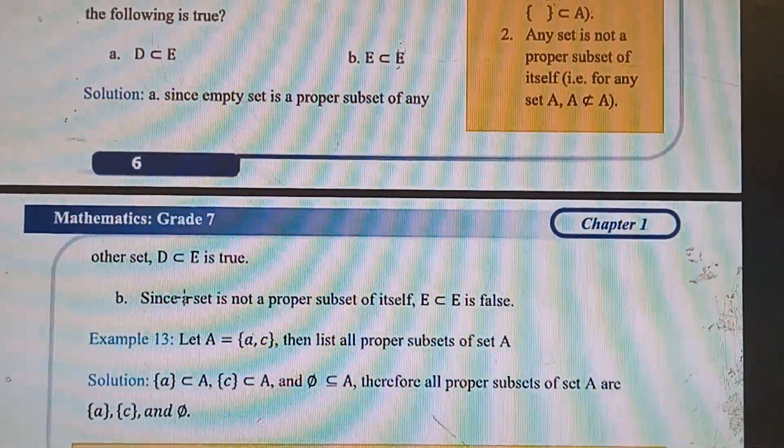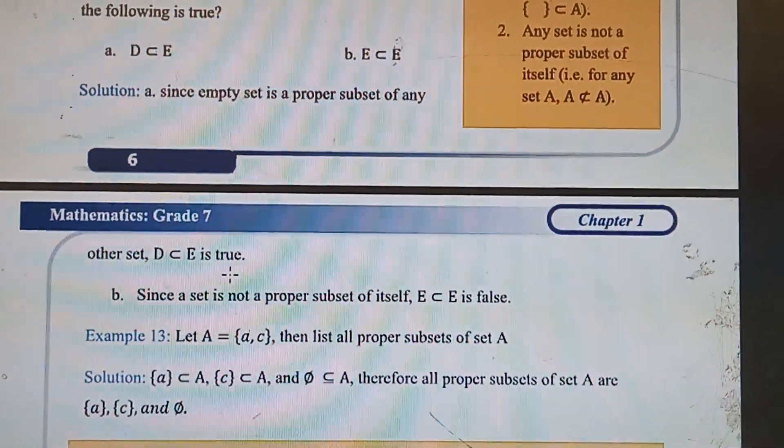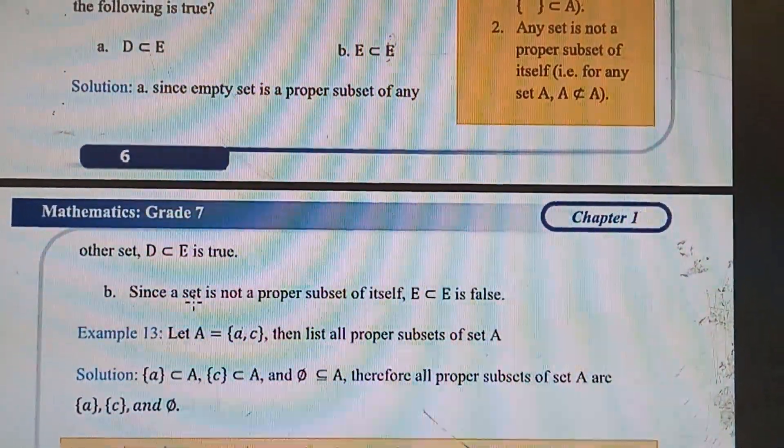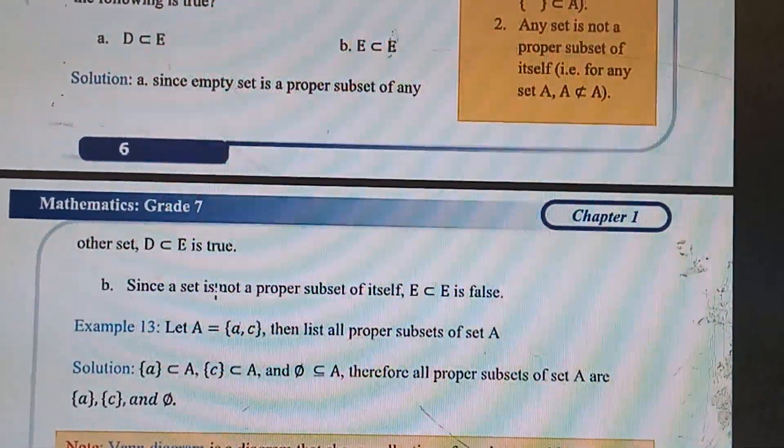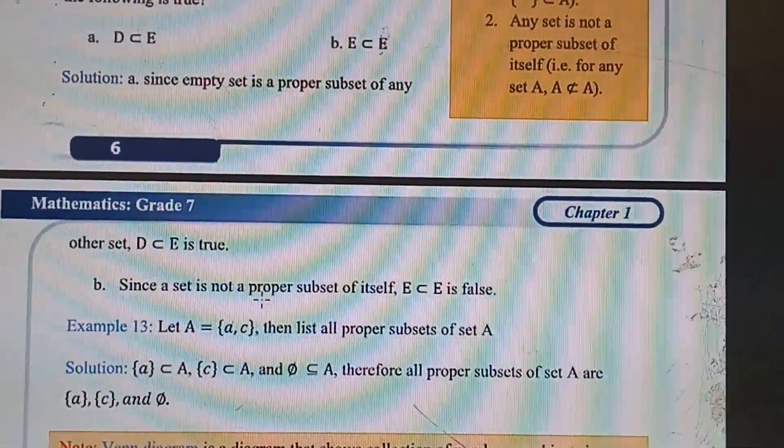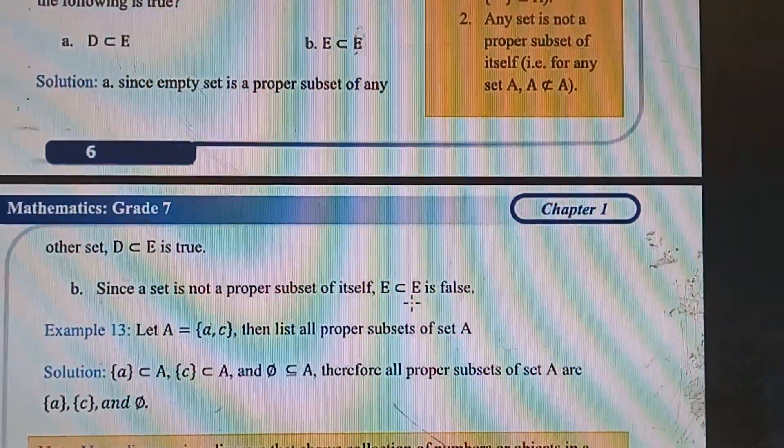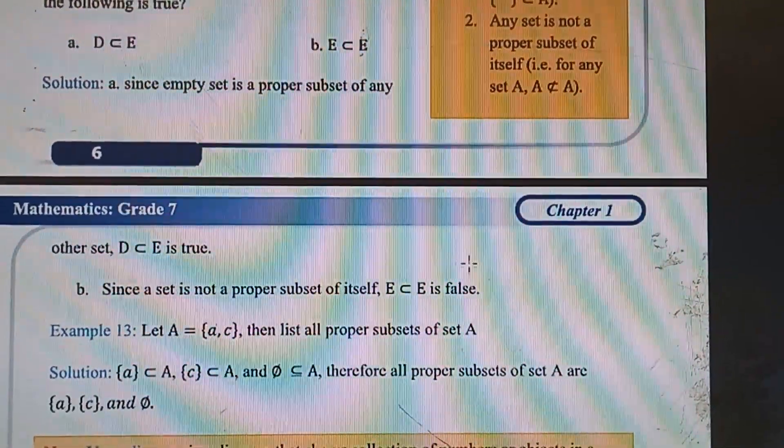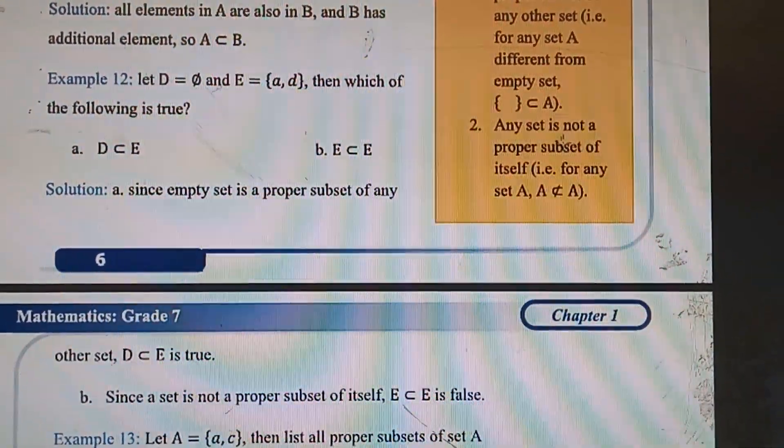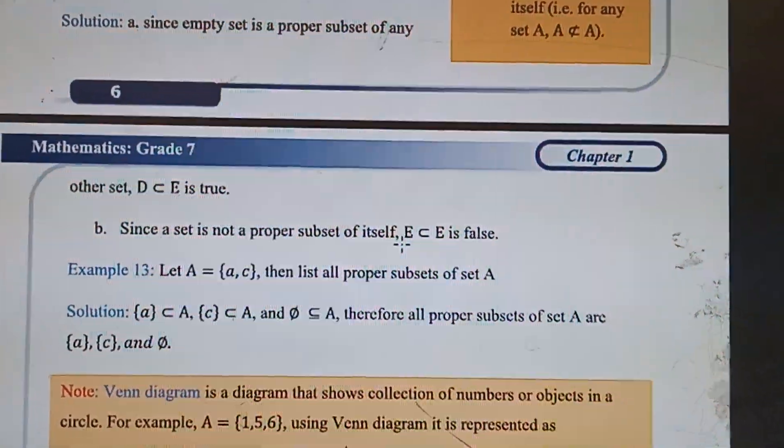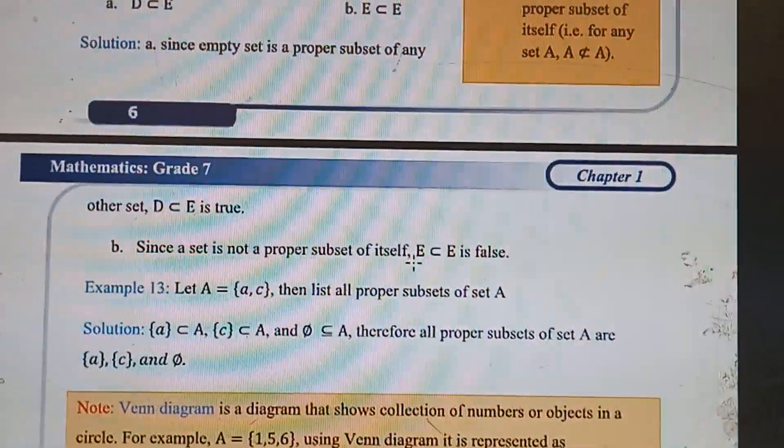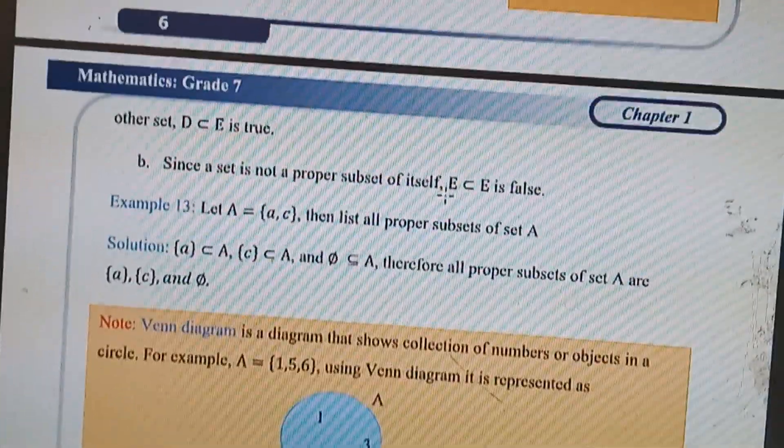So the decision is D is a proper subset of E is true. Option B: since a set is not a proper subset of itself, E is a proper subset of E is false. From this we understand a set cannot be the proper subset of itself. Good.